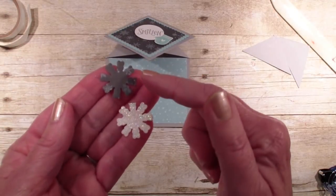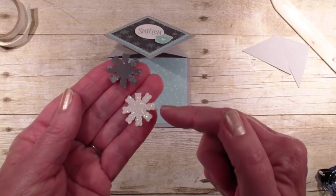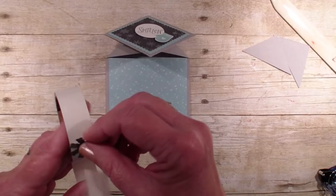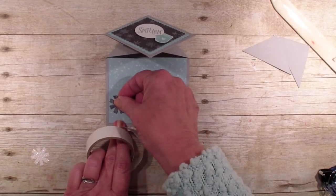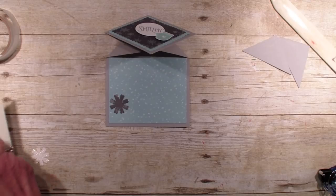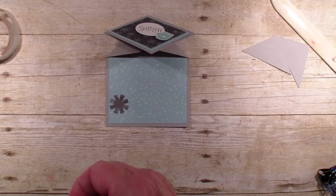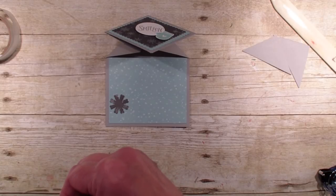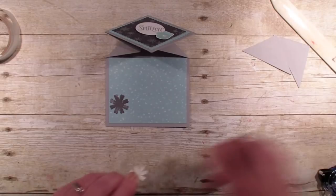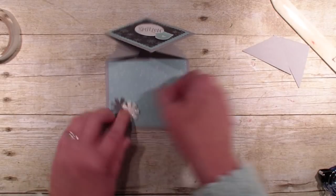Then what I have done, I have taken the snowflakes. I cut one out with a designer series paper, and one with the dazzling diamonds glimmer paper. So I'm just going to put that one on with a glue dot, and the dazzling diamond one with a dimensional. So it kind of pops up like so.